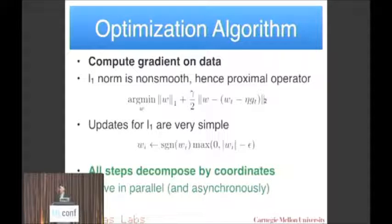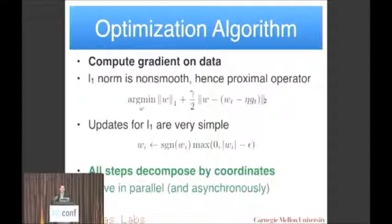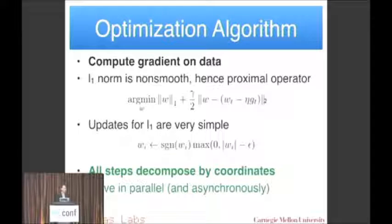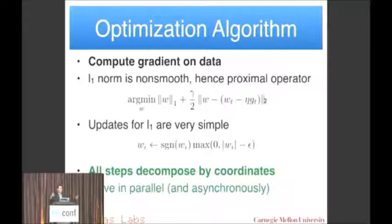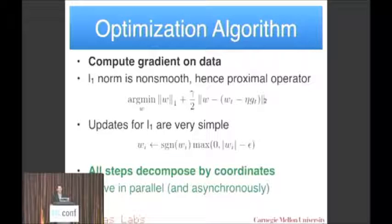Here's a simple optimization algorithm. You take the gradient on maybe a subset of the data, apply it in a gradient update step to your parameters, and then shrink this back to zero. This is called a proximal operator — several people have gotten tenure for doing awesome work on this. For simple L1, it's a very trivial algorithm: update, shrink, update, shrink. The nice thing is that all parameters decompose by coordinates, so you can do all the shrinkage steps independently, which means you can do it asynchronously in parallel.